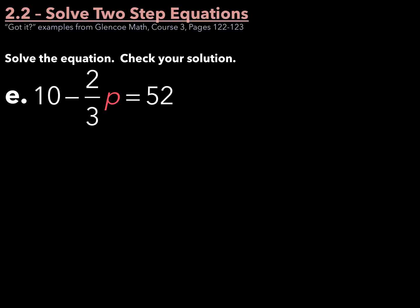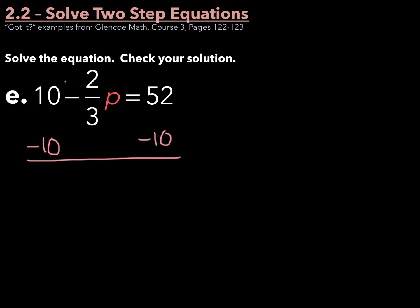Example E is where I see the most types of mistakes, because our variable p is on the inside and we have a subtraction. The key question is how do I get p alone. We first need to move this 10. Recognize that the minus sign is with the two-thirds p — this 10 is just a positive 10. So to move a positive 10, subtract 10 from both sides. Students often add because they see the subtraction sign, but the subtraction sign is with the two-thirds p.